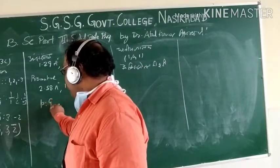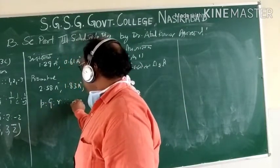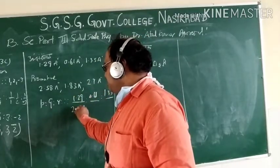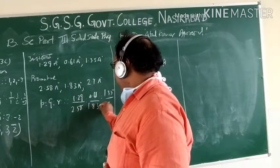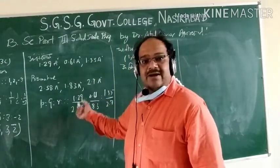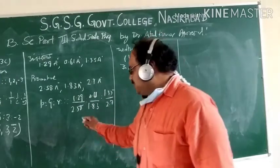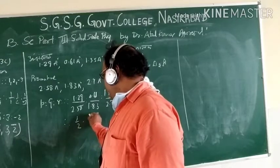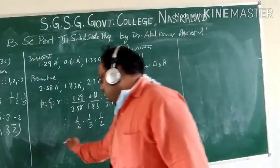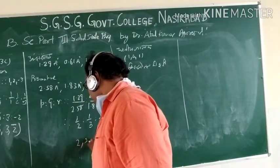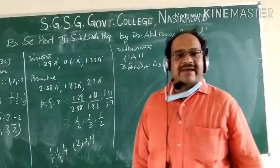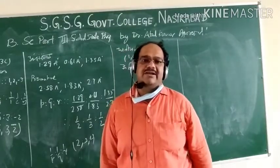To find PQR, the intercepts 1.29, 0.61, and 1.35 have to be divided by the primitive vectors 2.58, 1.83, and 2.7 respectively, because I have to find out PQR — the multiples of ABC. So the multiples work out to 1/2, 1/3, and 1/2. Taking the reciprocal, we get 2, 3, 2. Because there is no fraction in these, we already have whole numbers, so the Miller indices are 2, 3, 2.